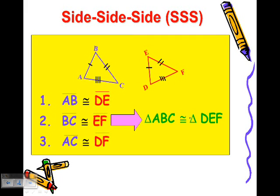In other words, if we know that three sides of one triangle, ABC for example, are congruent to three sides of another triangle, DEF, then we know that the two triangles are going to be congruent triangles.